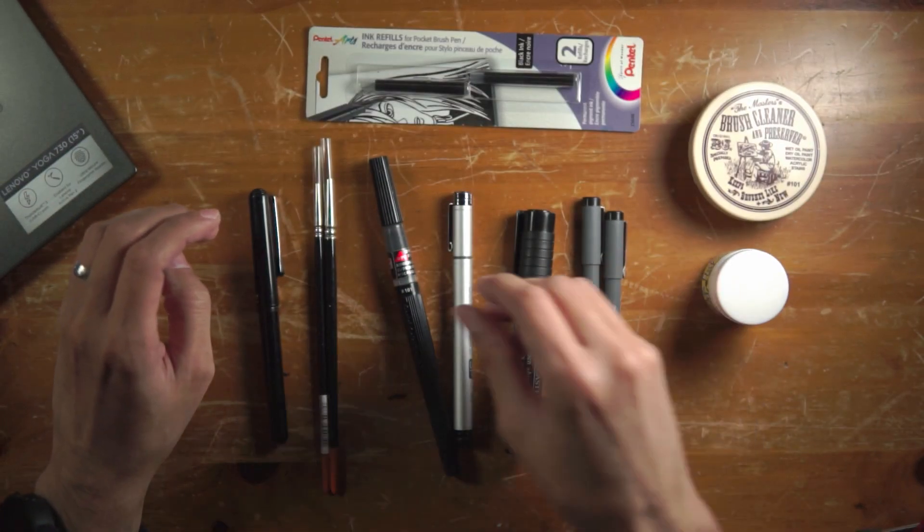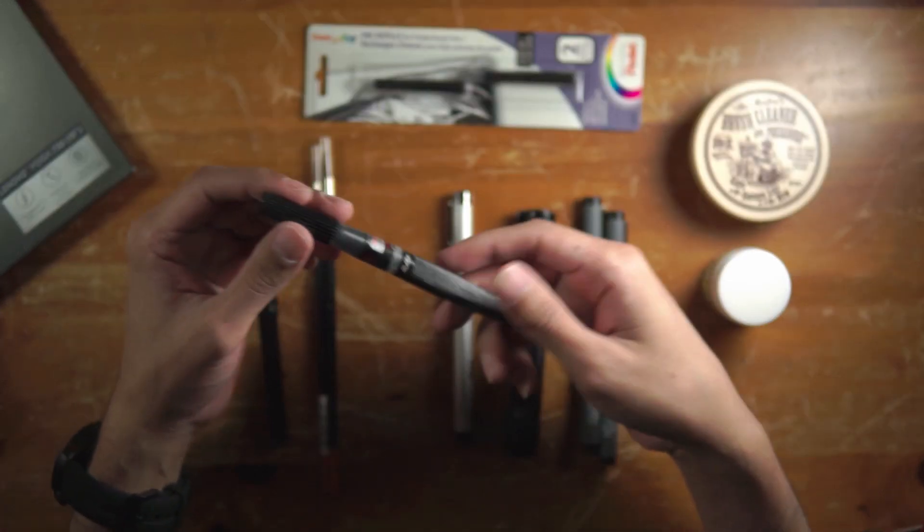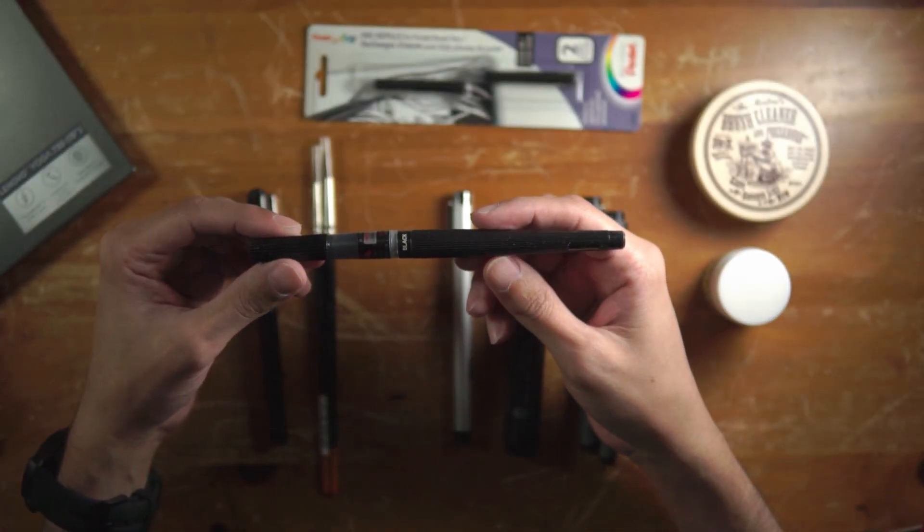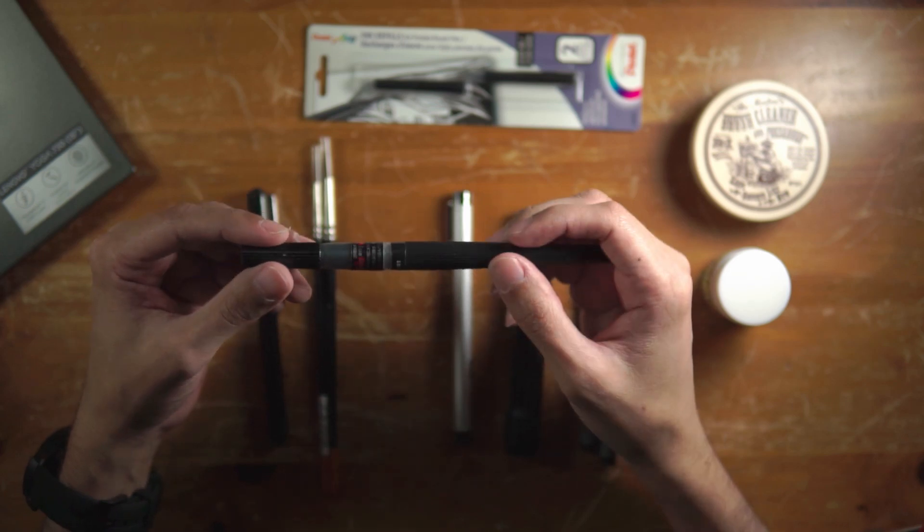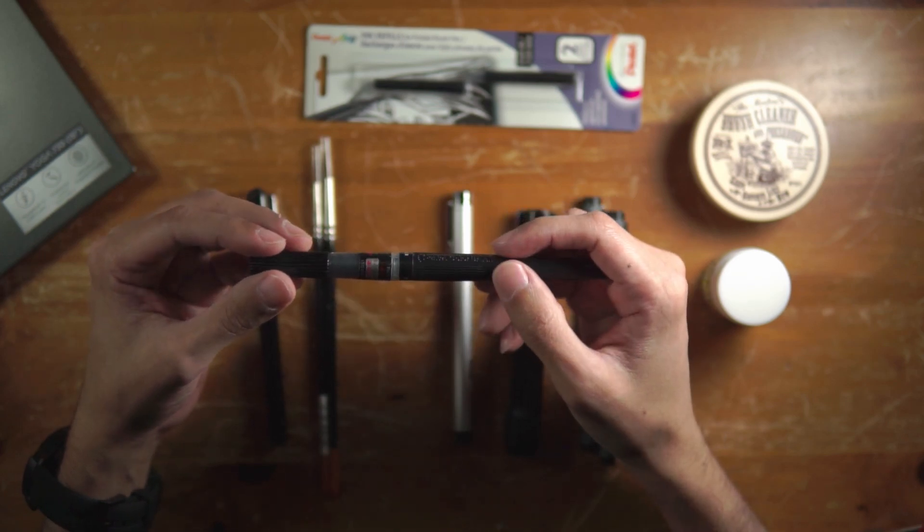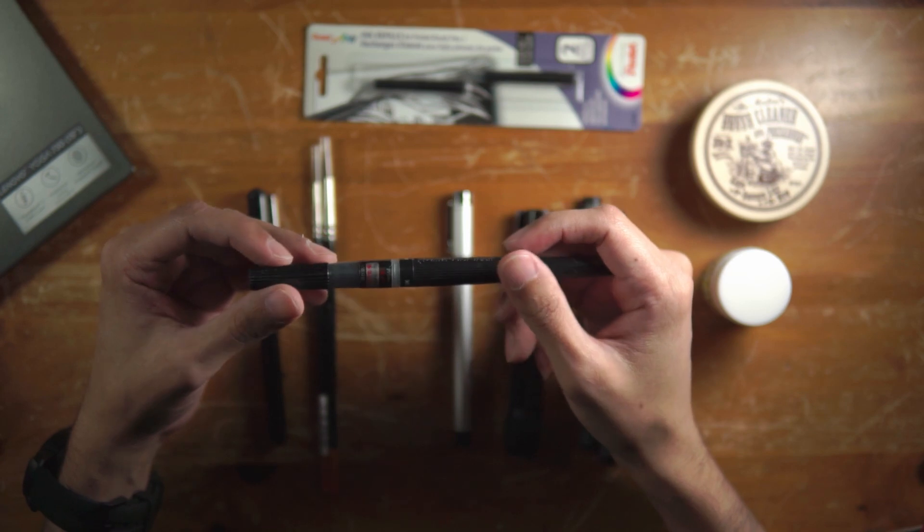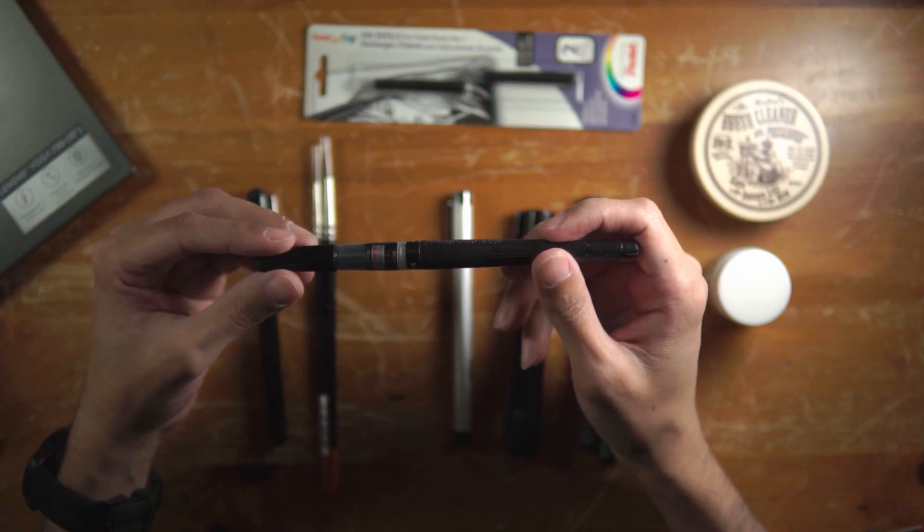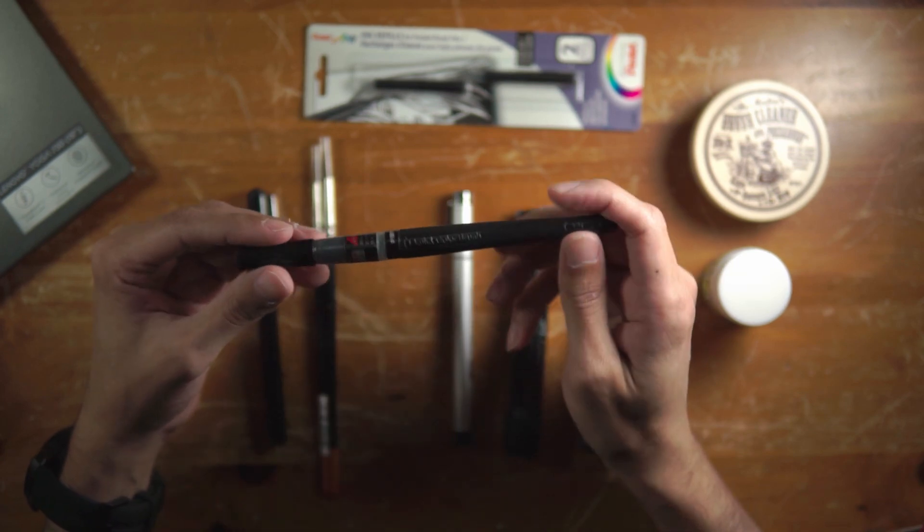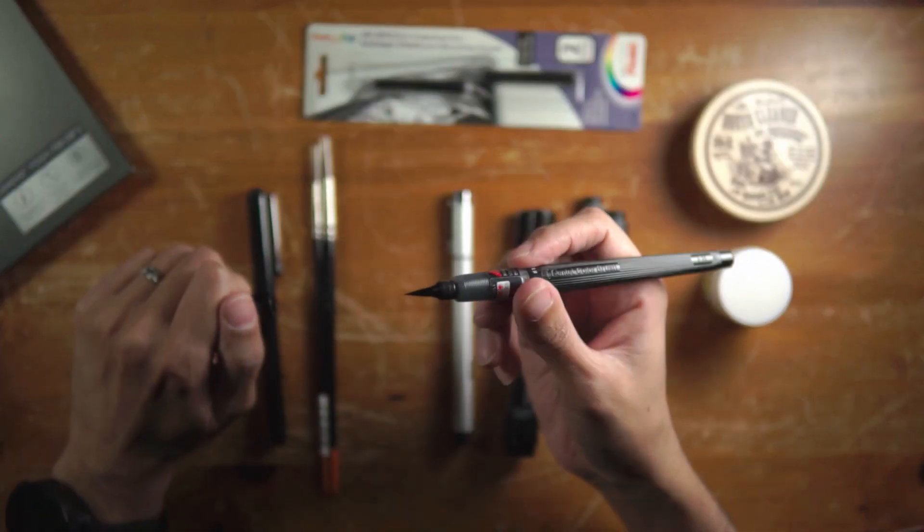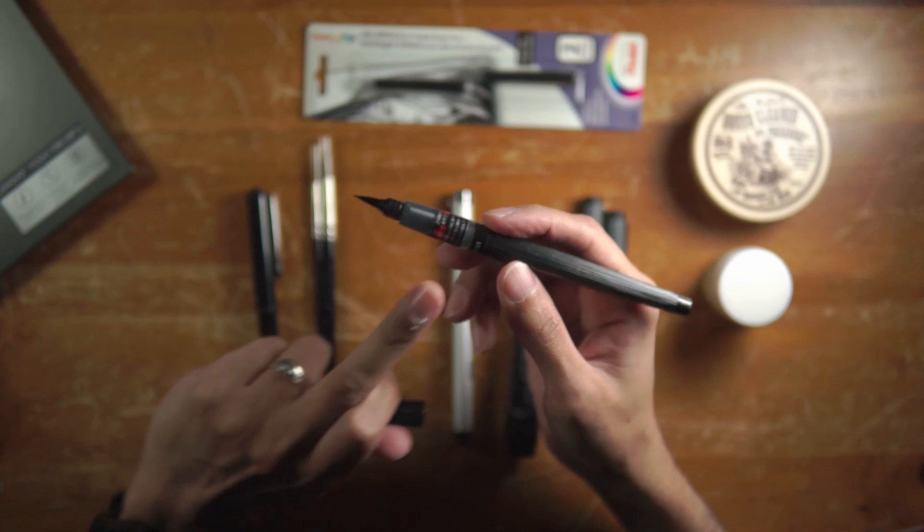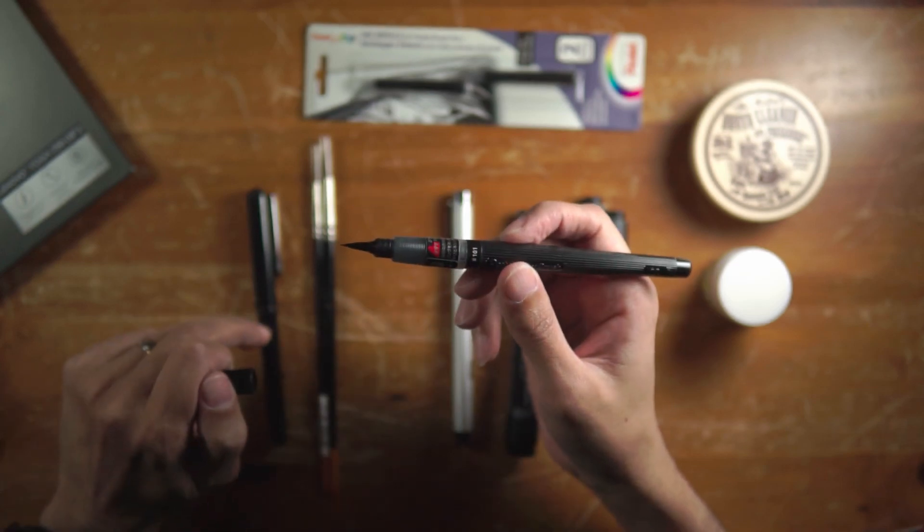Moving on to my third tool of choice, this is a brush pen. I believe this is by Pentel, I'm not sure. There's a lot of Japanese writing here and I don't remember when I ordered this where I ordered it from, what kind of branding it was. But I do believe it's Pentel branding and it's basically just like the pocket pen. It's also a brush.